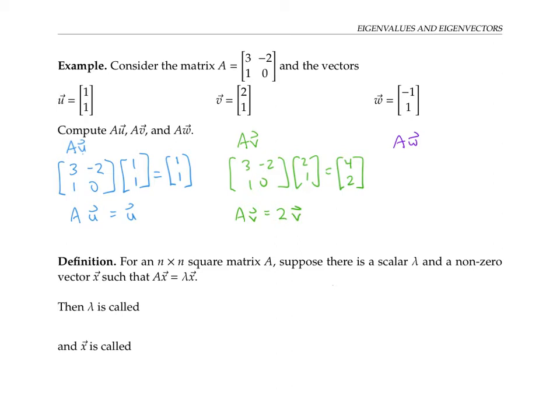Does that happen for all vectors? Let's try A times w. This time our answer, [-5, -1], is not a multiple of the vector w that we started with. So u and v are special vectors for A in that they are stable under multiplication by A — we'll give them a special name: they're called eigenvectors for A.